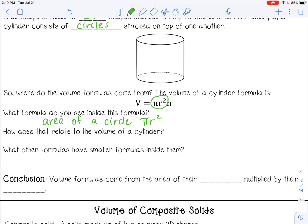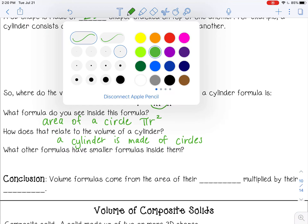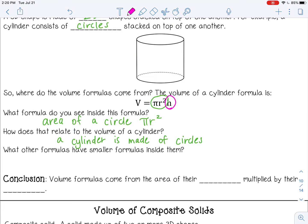How does that relate to the volume of a cylinder? Well, a cylinder is made up of circles. And then if you think about the height, the height really just tells you how many circles are there? How tall are the circles?